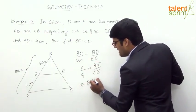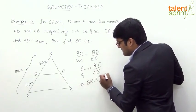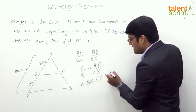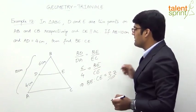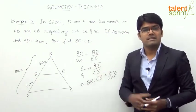So from this we can say that BE is to CE is equal to 6 by 4, is nothing but 3 is to 2. So the ratio between BE and CE is 3 is to 2.